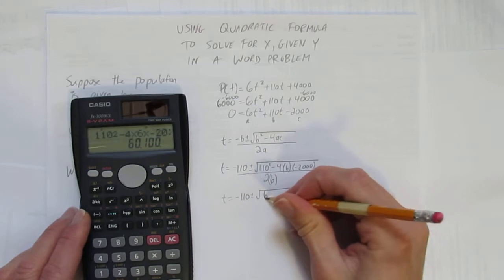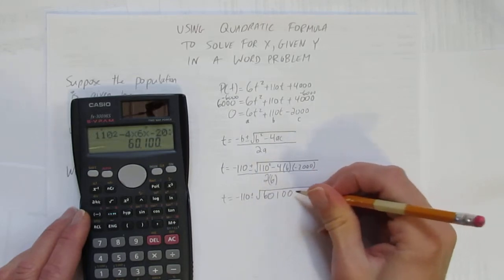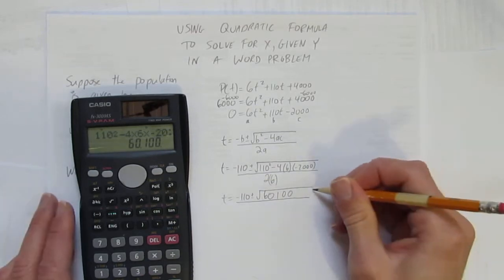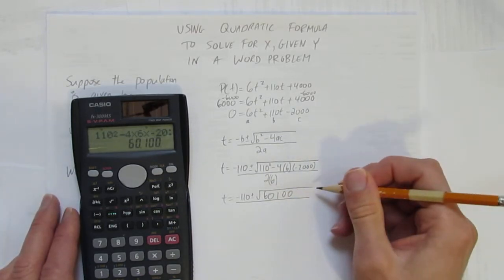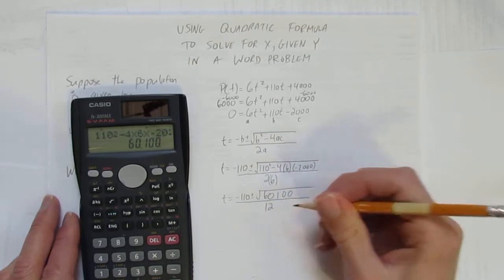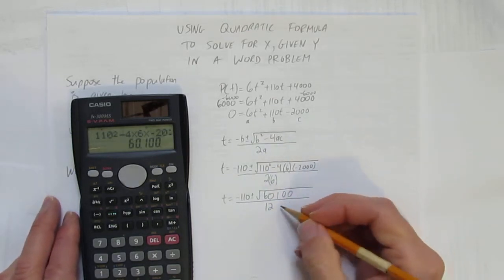I'm going to do all this math at once. What's 110 squared minus 4 times 6 times negative 2,000? I get 60,100. And 2 times 6 is 12.